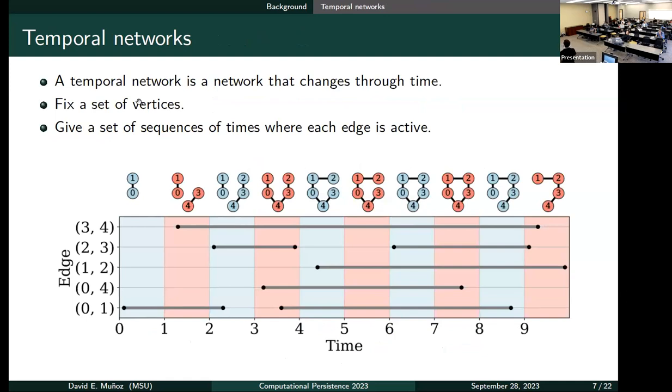A temporal network is defined as a fixed set of vertices and then a sequence of times where the edges are active. So here we have an example with five vertices and then five edges that are active in different times. What we will do in general is take these intervals of time and then take the graph snapshot, which would be taking all the edges that were active during this interval and putting that in a single graph. We will always be using just the vertices that are connected to some vertex, so we will never have isolated vertices in our setting.